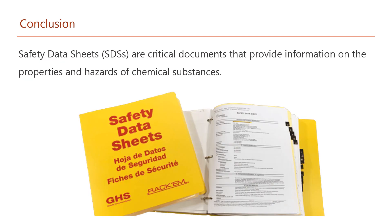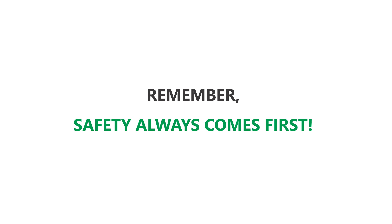In conclusion, Safety Data Sheets, SDSs, are critical documents that provide information on the properties and hazards of chemical substances. By understanding the 16 sections of an SDS, employees and business owners can take the necessary precautions to ensure the safe handling and use of these substances, ultimately reducing the risk of accidents and injuries. We hope this video has been informative and helpful in increasing your knowledge and awareness of SDSs. Remember, safety always comes first.